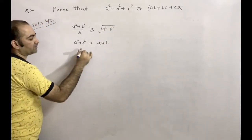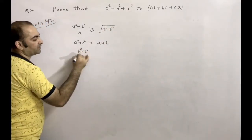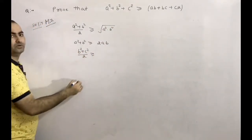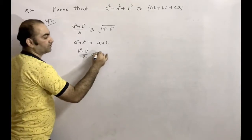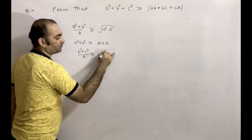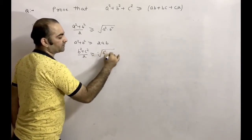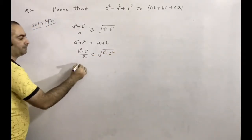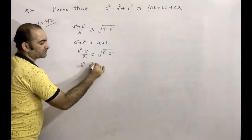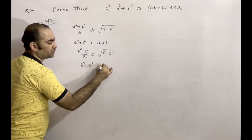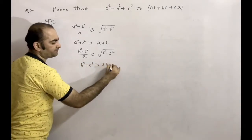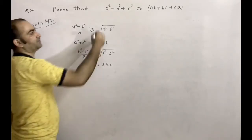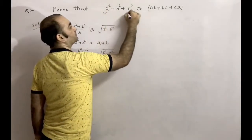Next, applying AM-GM to b² and c²: (b² + c²) / 2 ≥ √(b² · c²). Simplifying: b² + c² ≥ 2bc. Similarly, applying AM-GM to a² and c².